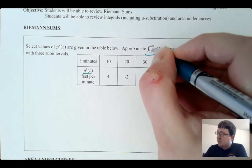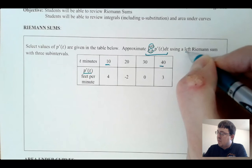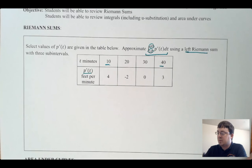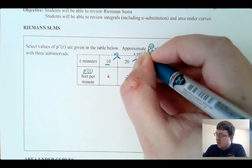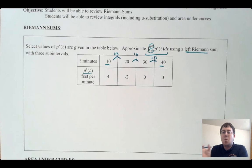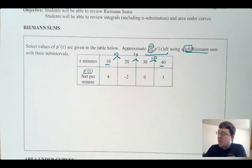I want to use a left Riemann sum, which means that when I'm making these rectangles, I want to choose the left height of each rectangle. I'm going to use the table the way it is. What I need first is the distance between all of my different intervals. From 10 to 20 there's a distance of 10, from 20 to 30 a distance of 10, and from 30 to 40 also a distance of 10. That's going to give me the width of the rectangle. And the keyword here is I'm looking at the left heights, using three subintervals.